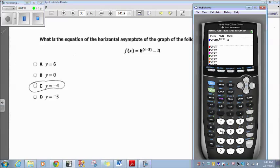f(x) equals 6 to the x minus 5 minus 4. The answer should be obvious, but let's just graph it anyway. When we graph it here, it looks like the asymptote is at negative 1, negative 2, negative 3, negative 4. y equals negative 4. Boom. Answer C.